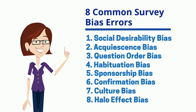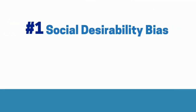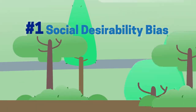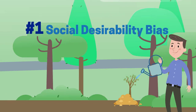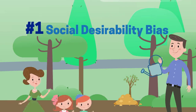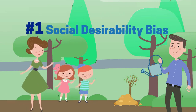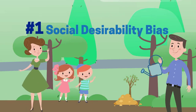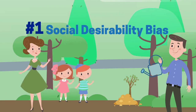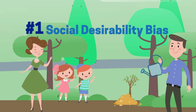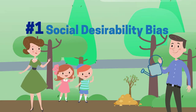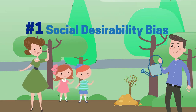1. Social Desirability Bias. Such topics as taking care of the environment and spending time with one's children are examples when people tend to answer in socially acceptable responses, which makes themselves look good but don't quite match up with reality.